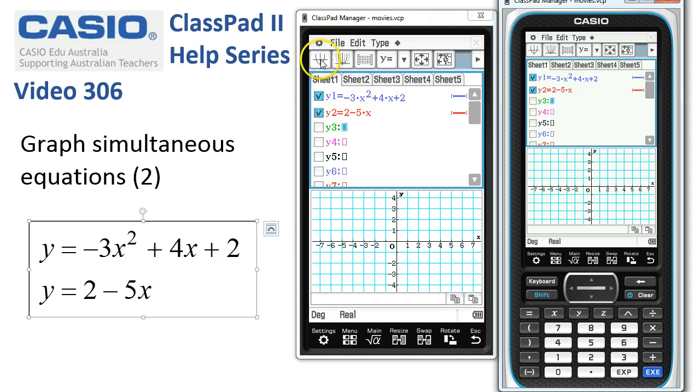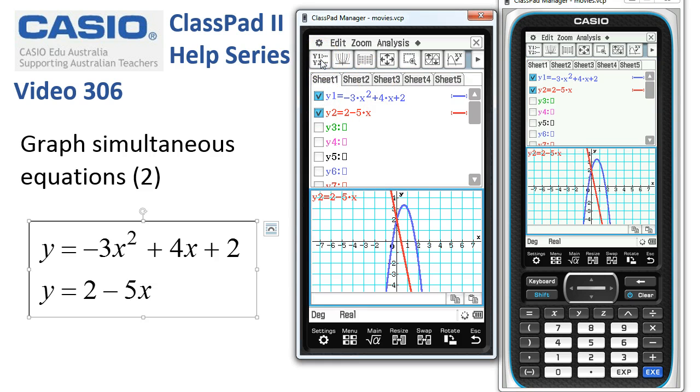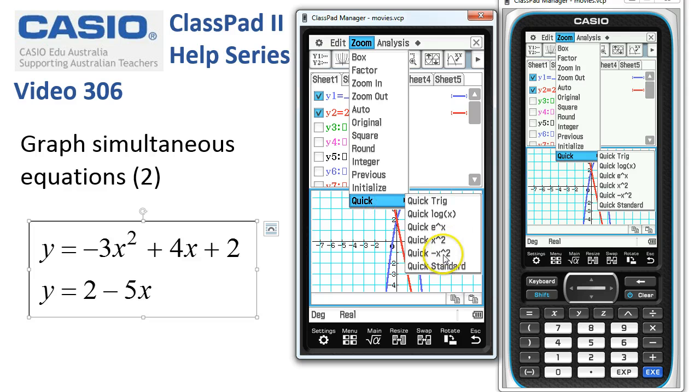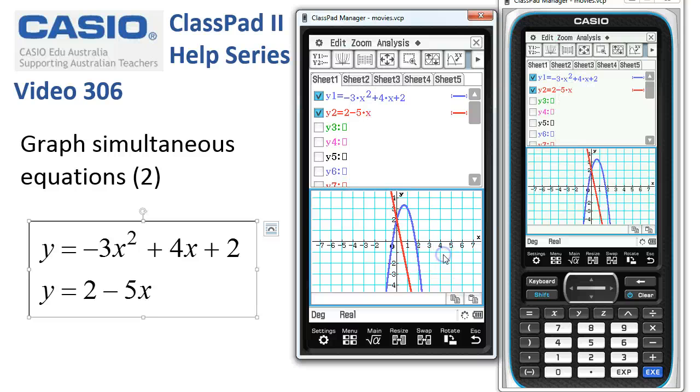Now I tap the Draw Graph icon. And you can see one of the points of intersection is readily visible but the other isn't. So there's a variety of ways to adjust our view window here. But let's just choose the zoom quick upside-down parabola one here. Because we know the sign of our quadratic is negative. So let's try this view window.